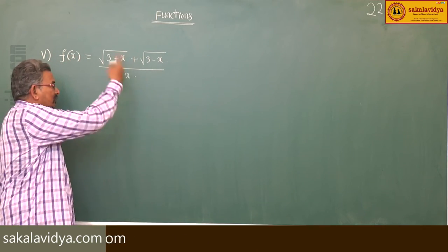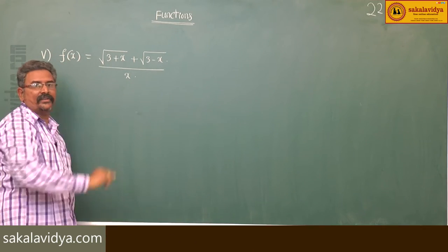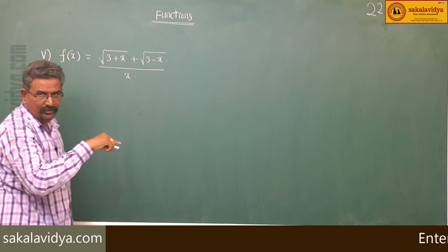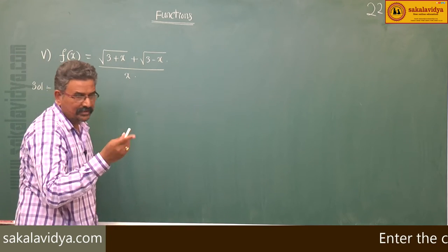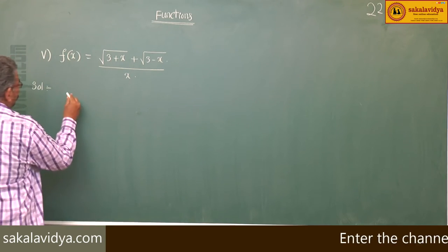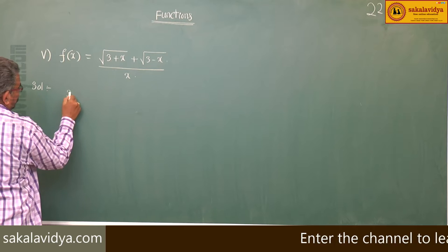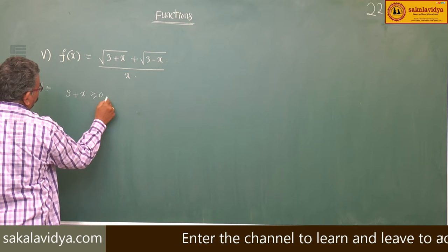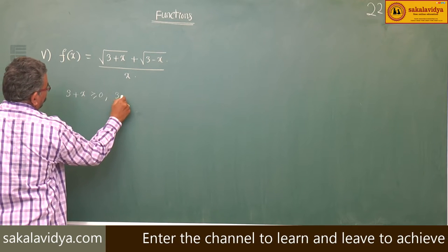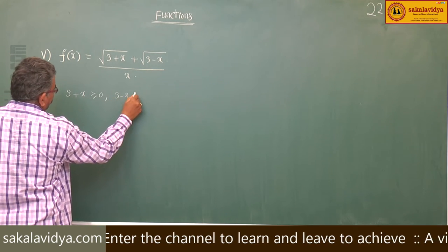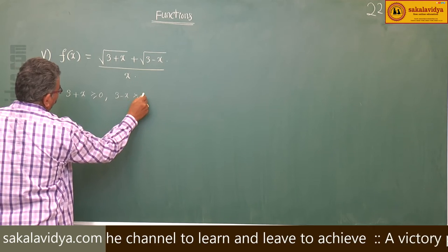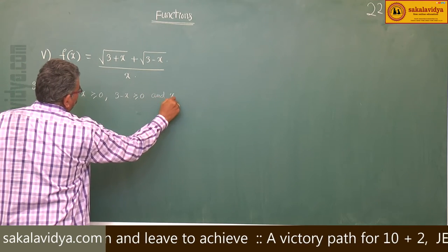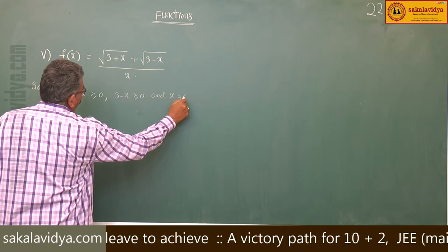If x is equal to 0, the function is not defined. So, in order to find the domain of this f of x: 3 plus x must be greater than or equal to 0, 3 minus x greater than or equal to 0, and x does not equal to 0.